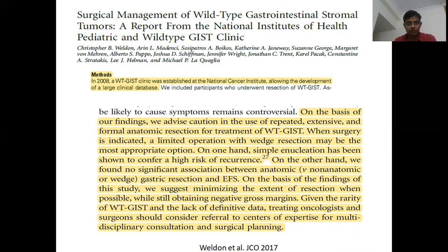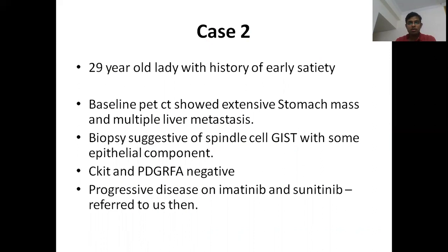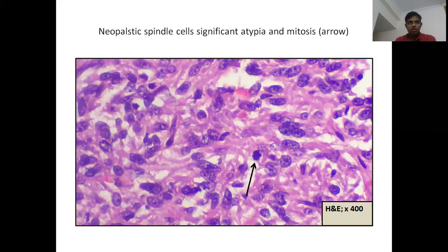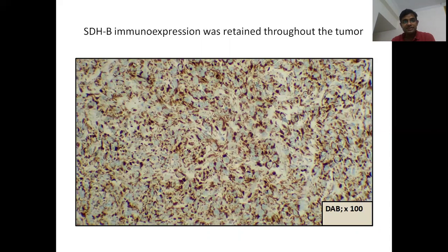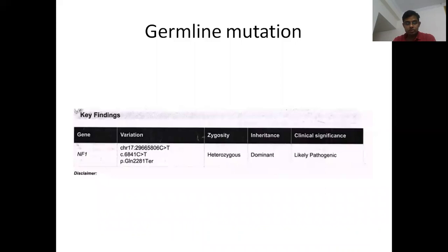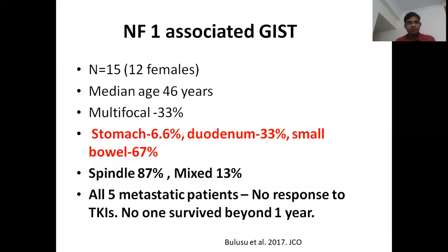Another case: a 29-year-old lady with spindle-type gastric GIST, CKIT and PDGFRA negative. Cells were mostly spindle-shaped with fewer epithelioid shapes, and SDHB was retained in the tumour. This is a germline NF1 mutation type of GIST — 0.1% of all GISTs — predominantly in females, with a younger median age, multifocal in one-third of patients. In metastatic setting, these tumours are not indolent and do not respond to TKIs. In this series, no one survived beyond one year, and none responded to imatinib or regorafenib.